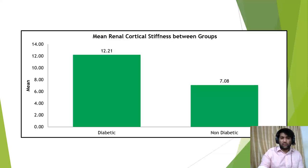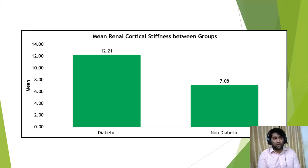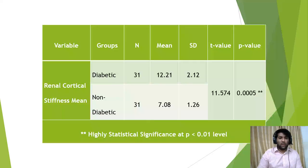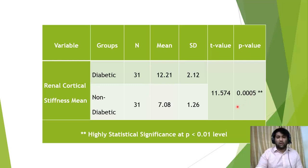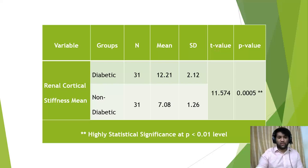Coming to the main point — renal cortical stiffness between the two groups — the mean is much higher in the diabetic group compared to the non-diabetic group. The two variables were compared using an independent t-test, and the p-value was much less than 0.01, showing a highly statistically significant difference between the two groups.